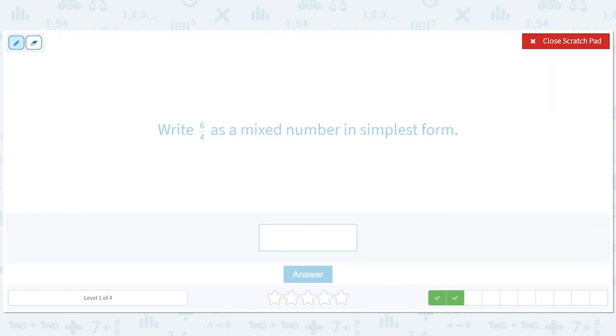Okay, how about 6 fourths as a mixed number in simplest form? So, we can start off and simplify that down to 3 over 2 right away. Dividing the top and the bottom by 2. So, we might as well do that and then do 3 divided by 2. 2 goes into 3 once. Get 1 left over.